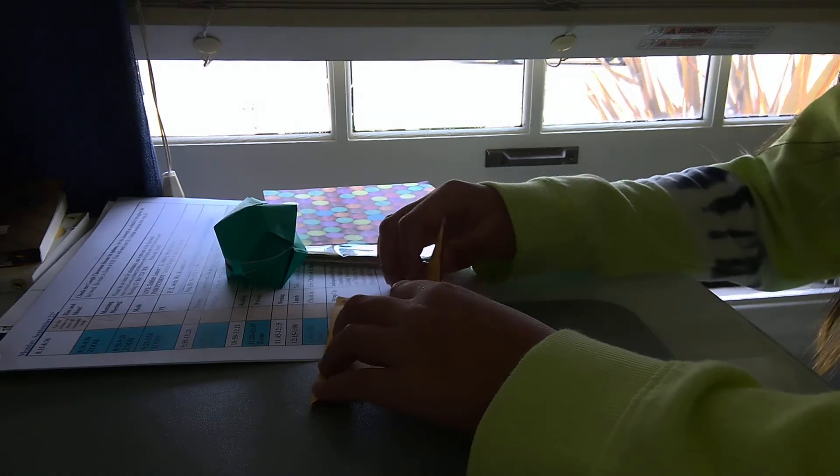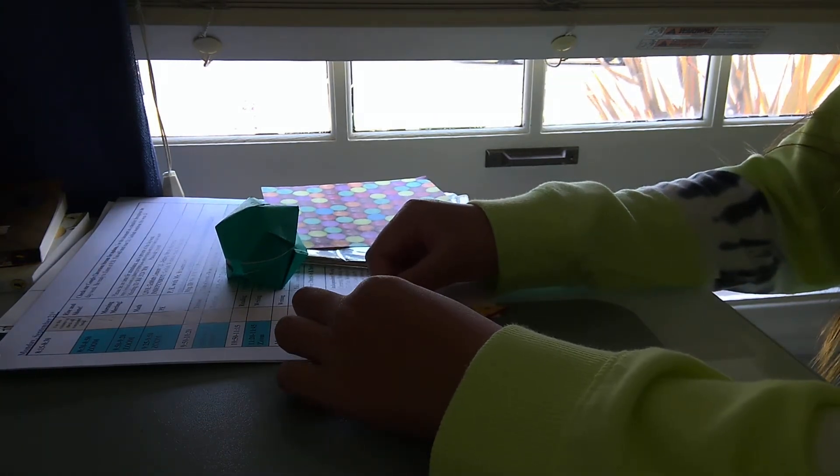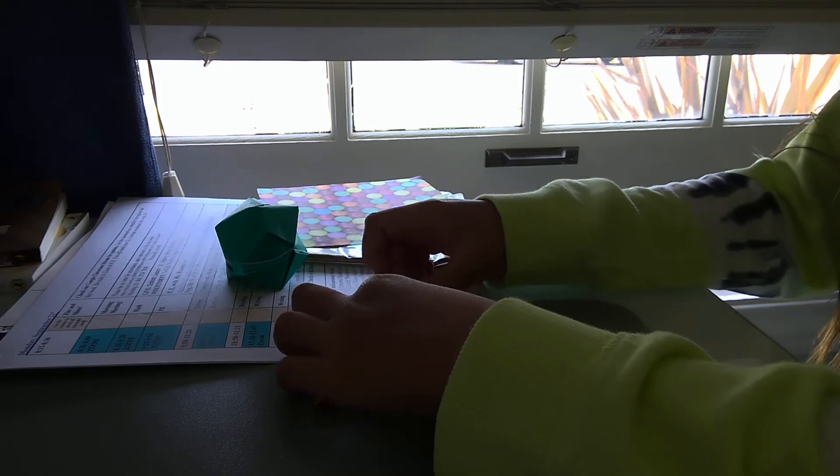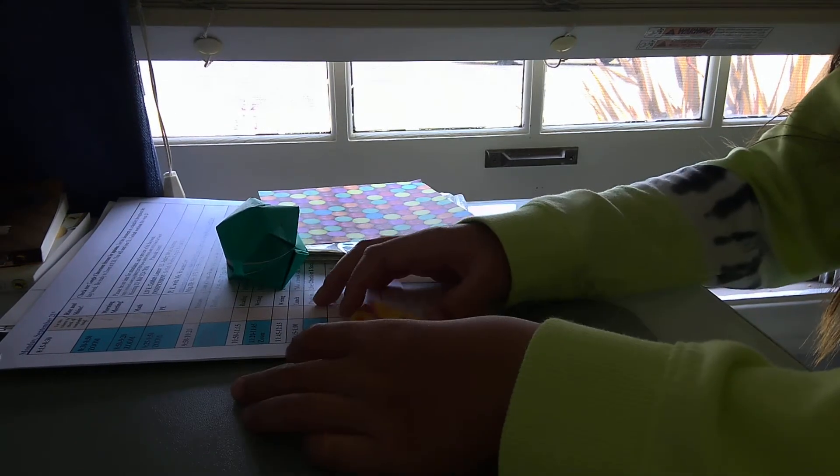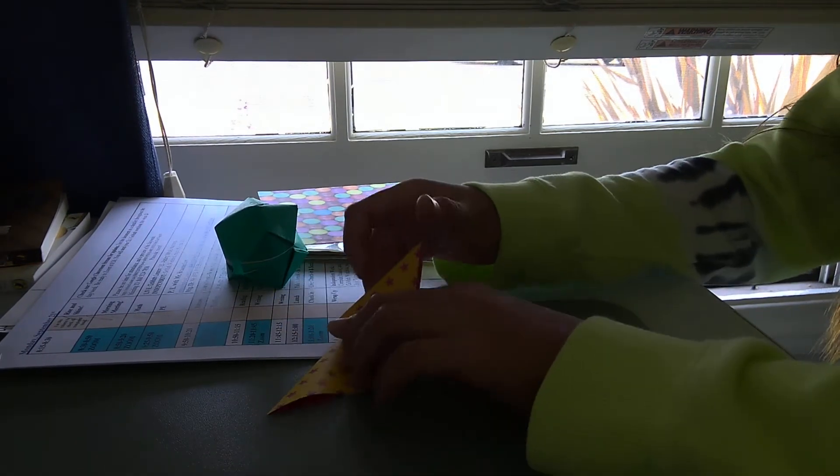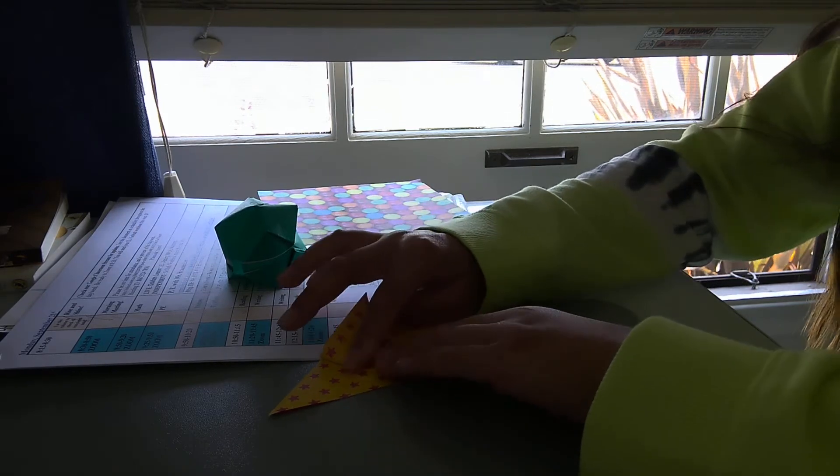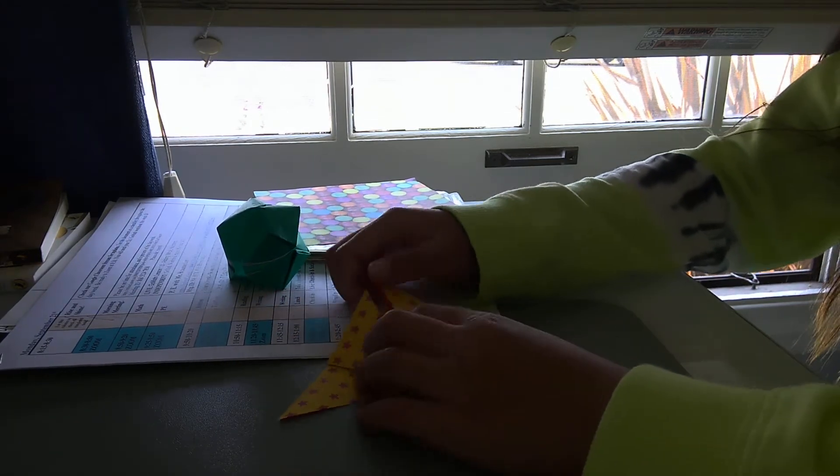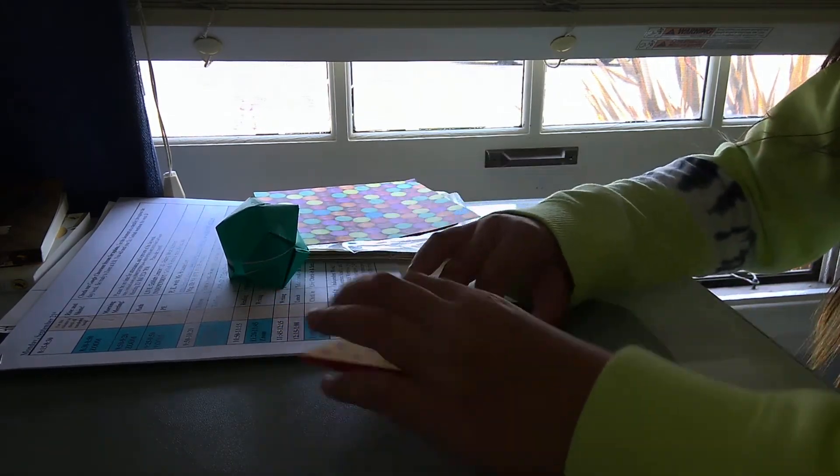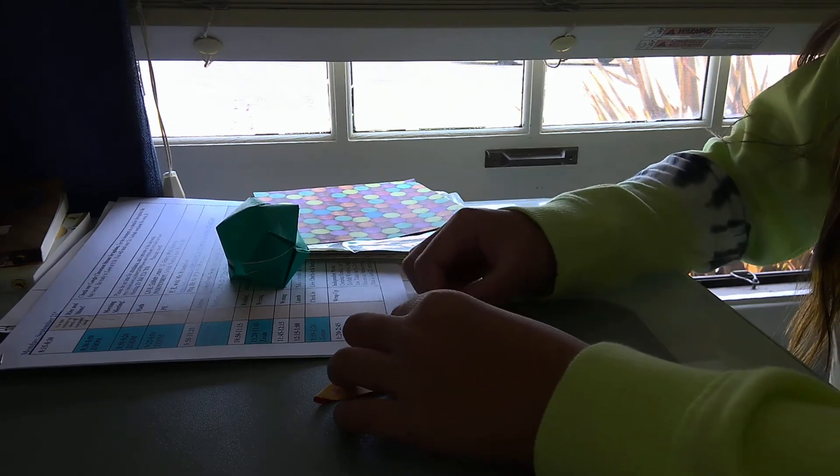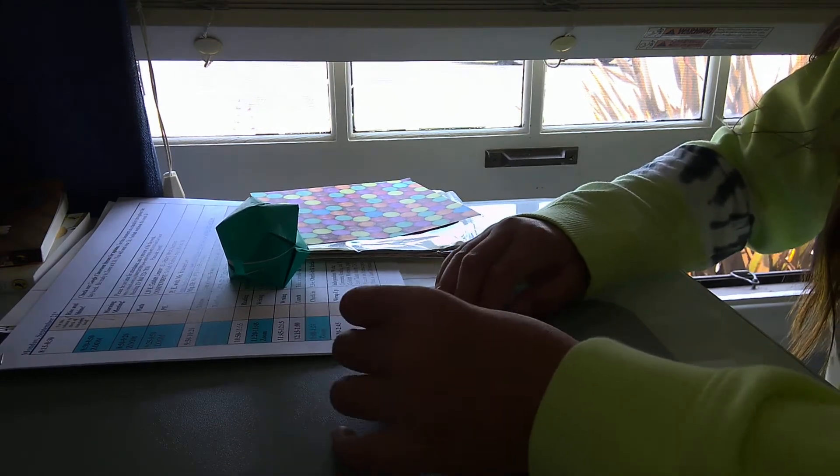Then take the edge here and fold it up to that corner so it looks like this. Do the same to this side. Now flip it over and take this flap here and bring it up to the edge, just like you did on the other side.